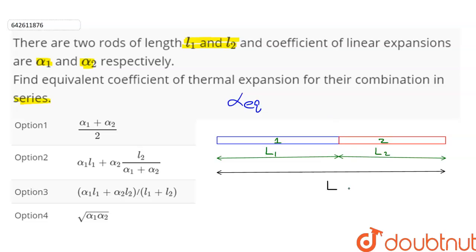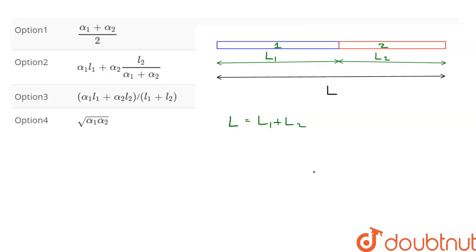Since the two rods are connected in series, the total length L is equal to L₁ plus L₂. Therefore, the change in total length will be equal to the change in length of the first rod plus the change in length of the second rod.